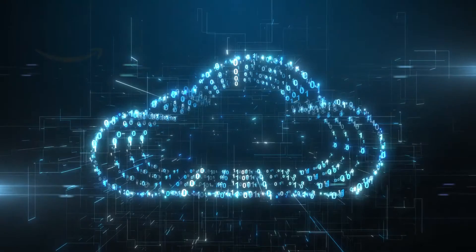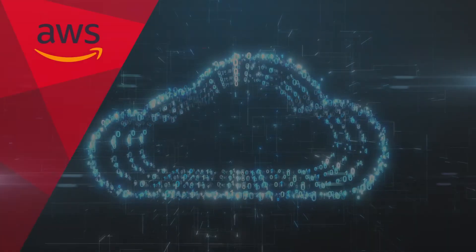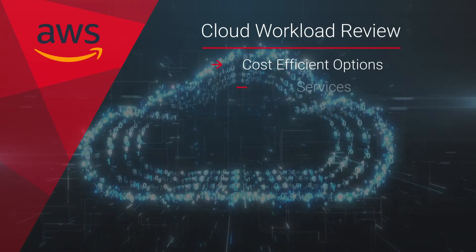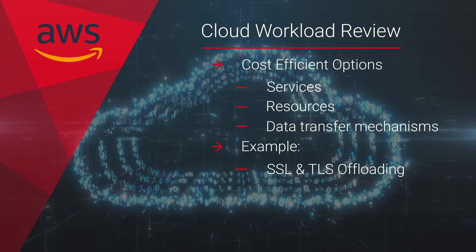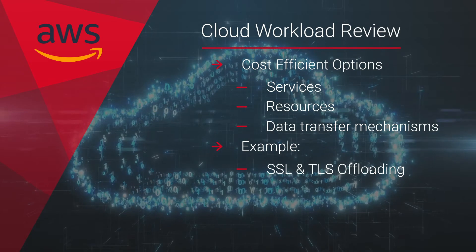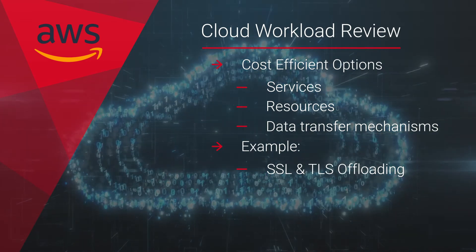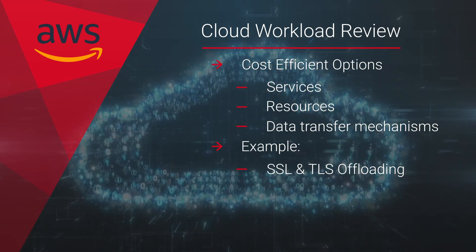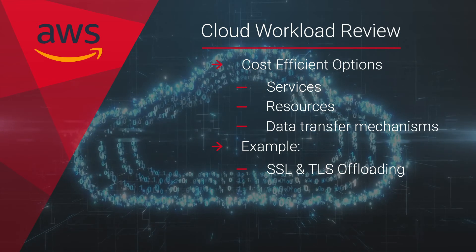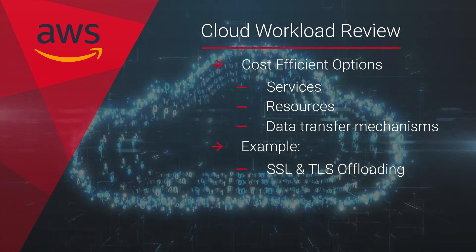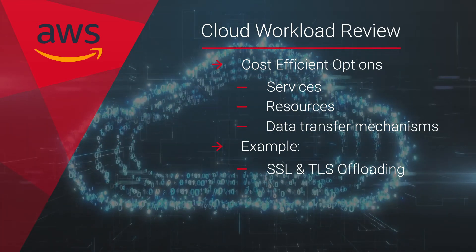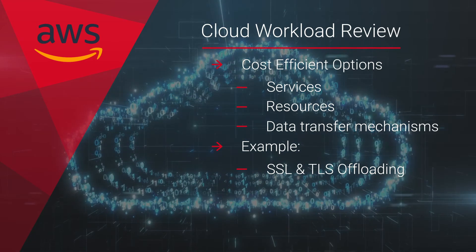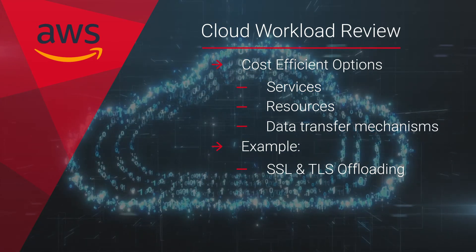The cloud workload is then reviewed for cost-efficient options where services, resources, and the implemented data transfer mechanisms are all evaluated for possibilities of enhancements. For example, compute architecture is reviewed to see if the SSL and TLS processing can be offloaded to load balancers to save on EC2 compute cycles.